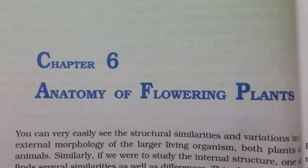6.1 The Tissue. A tissue is a group of cells having a common origin and usually performing a common function. A plant is made up of different kinds of tissues. Tissues are classified into two main groups, namely meristematic and permanent tissues, based on whether the cells being formed are capable of dividing or not.